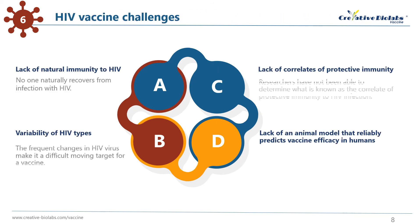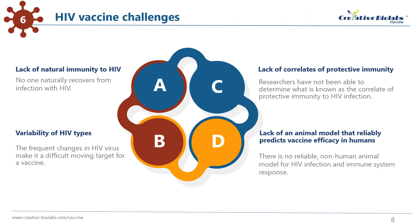HIV challenges the standard vaccine approaches first and foremost because, unlike diseases such as measles and chicken pox, no one naturally recovers from infection with HIV. If a person is infected with measles and survives, the immune response to the infection will usually be sufficient to prevent future infection. Researchers can use this naturally-derived immunity as a model for the level of protection a successful vaccine should provide. Without a model for natural immunity, researchers do not have a way to identify an immune response that would be effective against HIV, and thus developing an HIV vaccine is much more difficult.